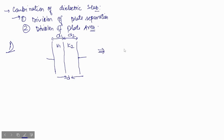You can draw this as two capacitors connected in series. Remember: when they are divided by plate separation, there will be equal charge distribution — that means they will be in series. And when they are divided by plate area, the potential difference will be equal and they will be connected in parallel. In this case, there is a division of plate separation, so they will have the same charge.